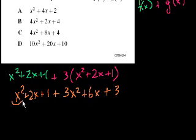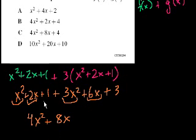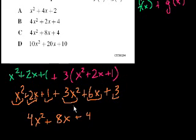Combining like terms: x squared plus 3x squared gives 4x squared. Then 2x plus 6x gives 8x. And 1 plus 3 gives 4. So the result is 4x squared plus 8x plus 4, and that's choice C.